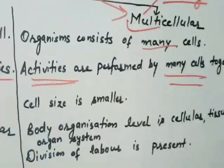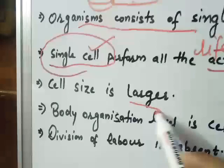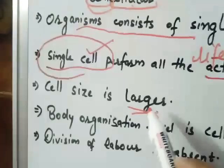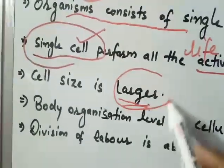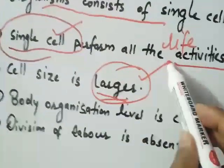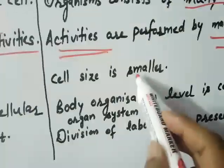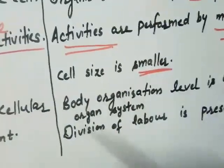Comparatively, the size of the single cell in a unicellular organism is bigger, because one cell has to do everything on its own.